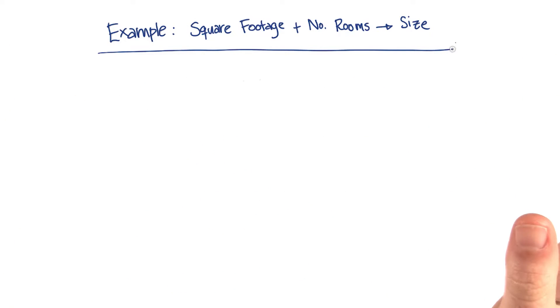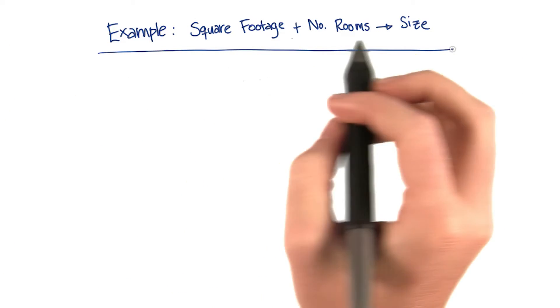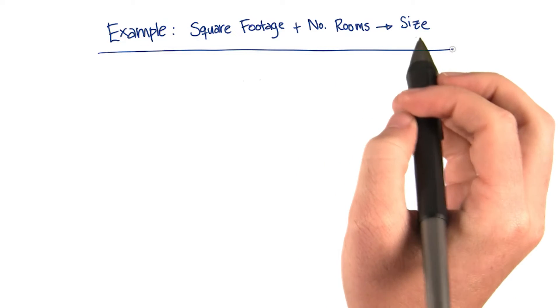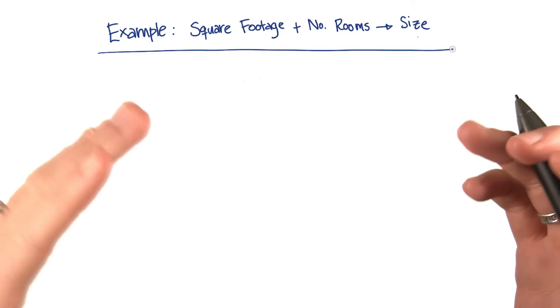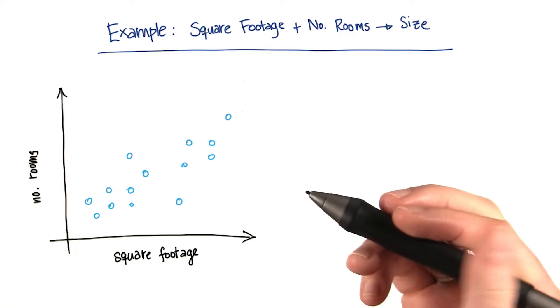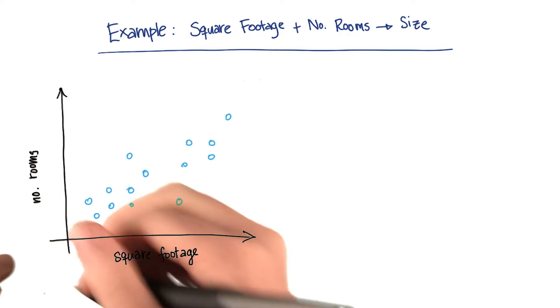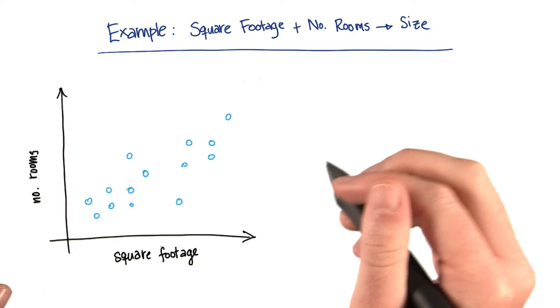So here's an example of what PCA is, transforming from square footage plus number of rooms into a single variable that roughly tracks the size of the house. So let's suppose this is my training data. I have the square footage on the x-axis and the number of rooms on the y-axis.